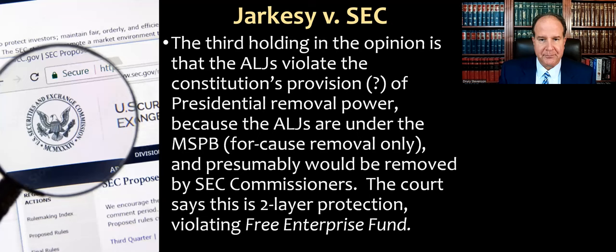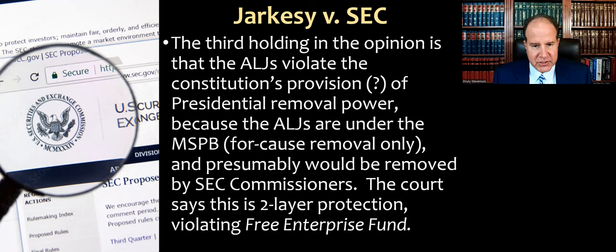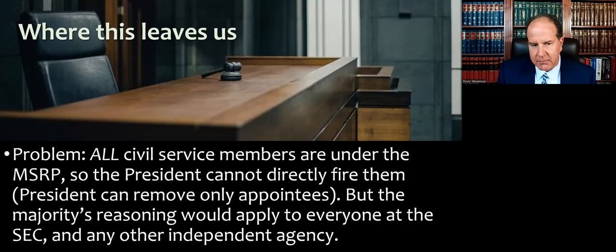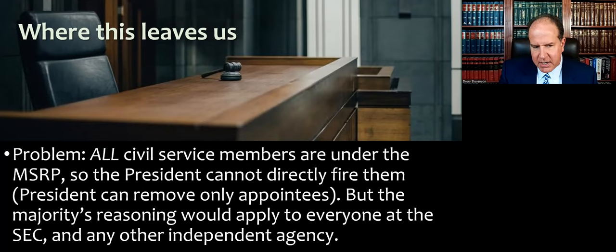The third holding of the opinion is that the ALJs violate the Constitution's provision of presidential removal power because the ALJs are under the Merit Service Protection Board — they have for-cause removal only — and would presumably be removed by the SEC commissioners, not fired by the president. The court says this is two-layer protection violating the Free Enterprise Fund case. The problem is that all civil service members are under the Merit Service Protection Board, and the majority's reasoning would seem to apply to everybody at the SEC, even the lowest level employees, and really any other independent agency.